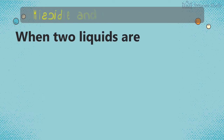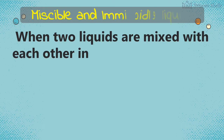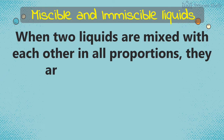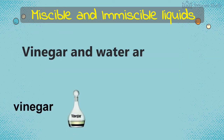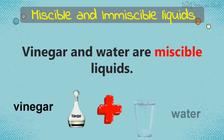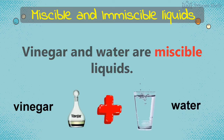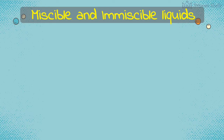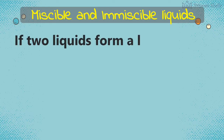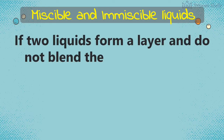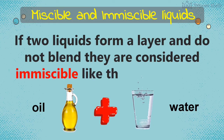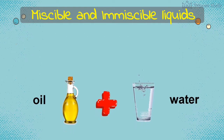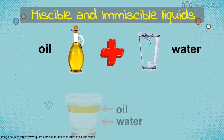Now let's talk about miscible and immiscible liquids. When two liquids are mixed with each other in all proportions, they are said to be miscible — vinegar and water are miscible liquids. On the other hand, if two liquids form a layer and do not blend, they are considered immiscible, like oil and water.